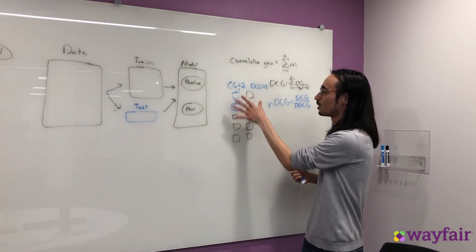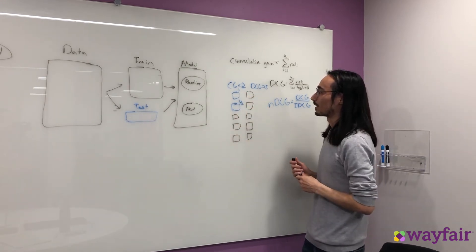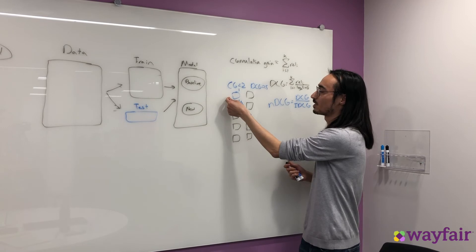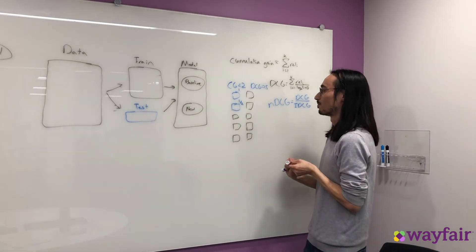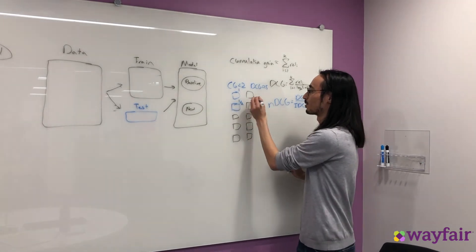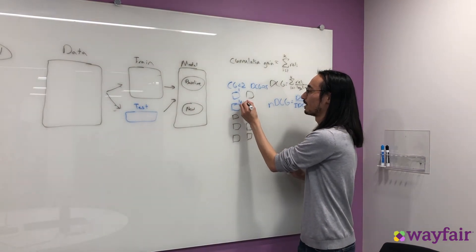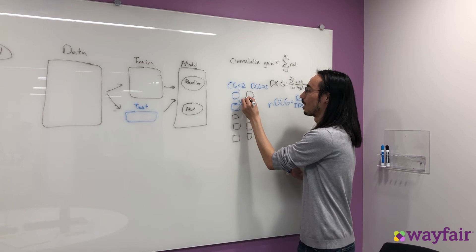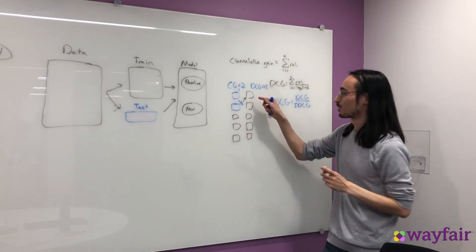So if I had the perfect sort here, what would that look like? Well, obviously I'd want a relevant item in position one, but I'd also want a relevant item in position two. So really what I'd want is for my recommendation at position three to go up to position two.